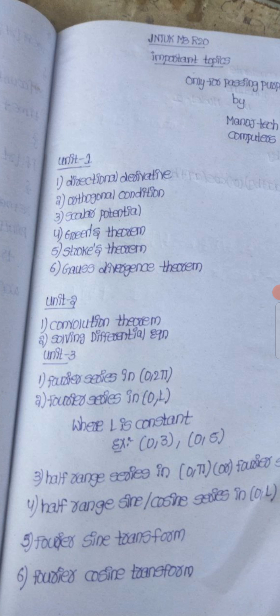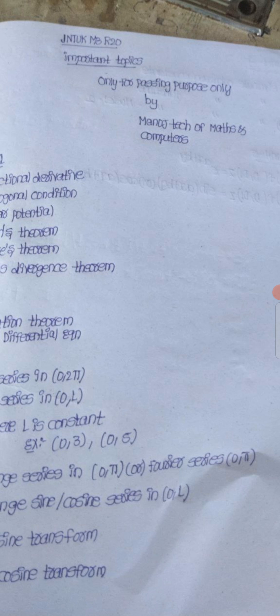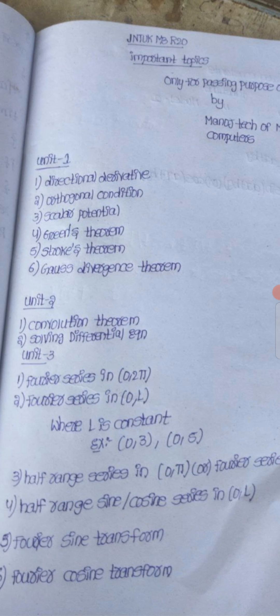Next, the half-range series is on the interval 0 to π, or the Fourier series on 0 to π. The half-range sine or cosine series uses the interval 0 to capital L, where capital L is a constant.